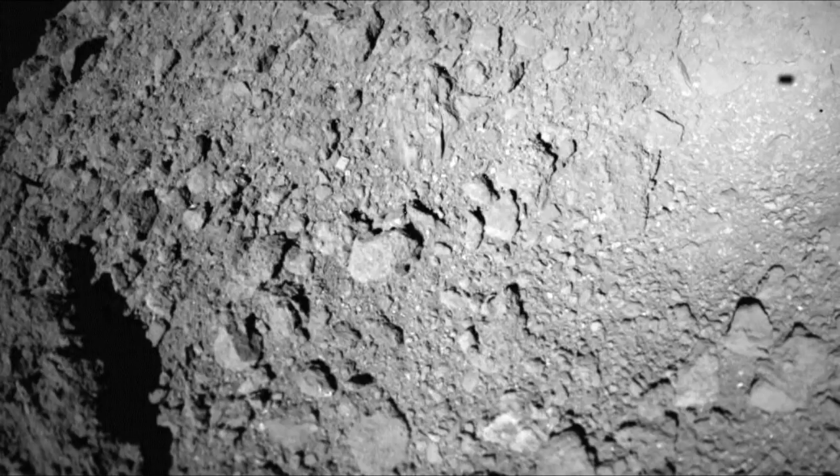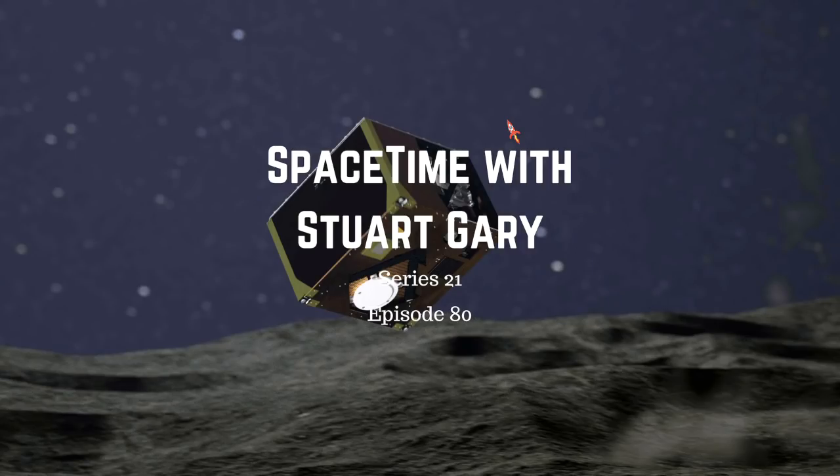The name Ryugu means Dragon Palace in Japanese, and it refers to a magical underwater palace in Japanese folklore, where a fisherman traveled to on the back of a turtle, returning home later with a mysterious box, much like Hayabusa-2 returning with asteroid samples. You're listening to Space Time, I'm Stuart Gary.